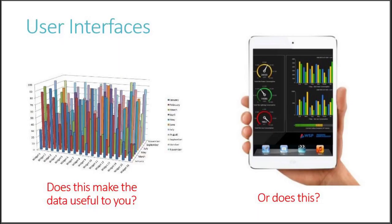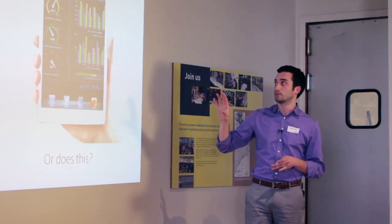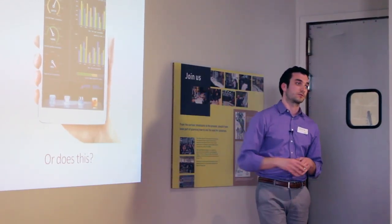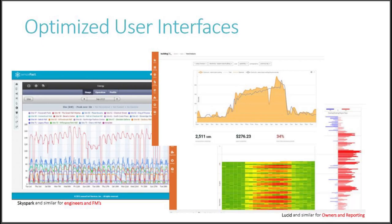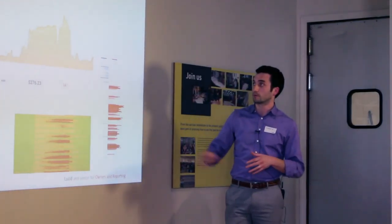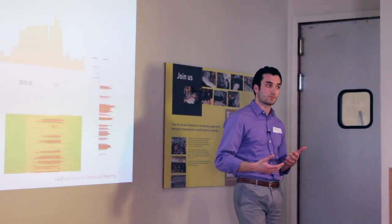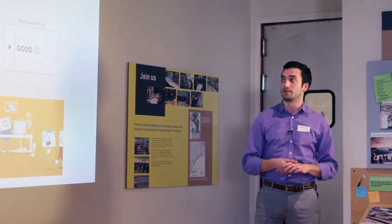The user interface needs to be designed appropriately. Using Excel to look at what's going on in a building is just not that useful. Moving forward, there are products available for an actual graphical user interface tuned for who it's appropriate for. An engineer or facility manager might look at something with more detail in a program called SkySpark. For reporting, you can use something like Lucid, where owners can see information in a more graphical space without needing to dive in as deeply.